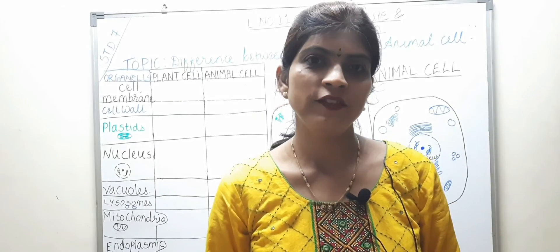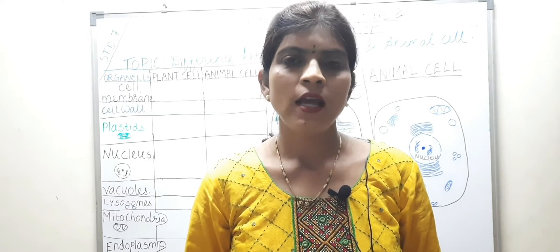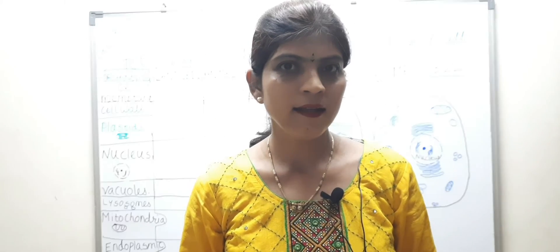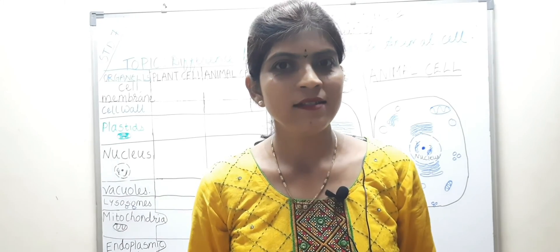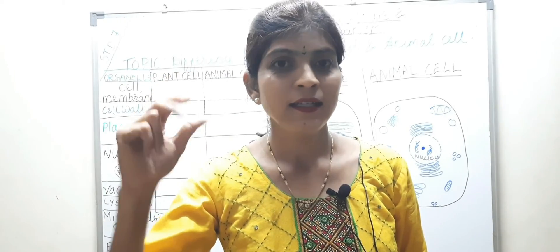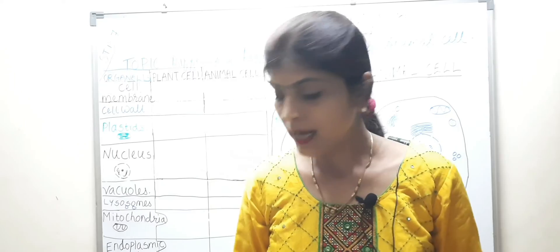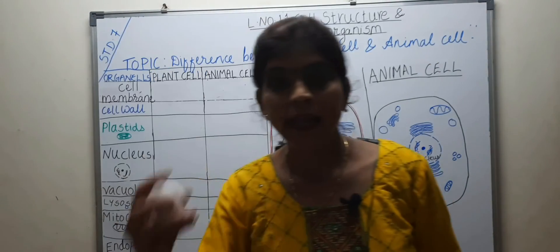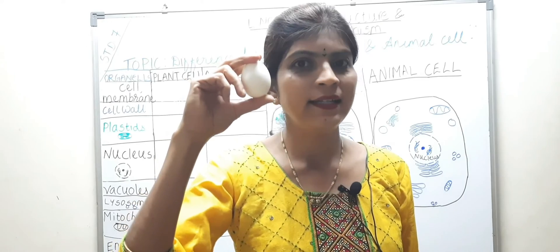And that's why the study of cells is so very significant. Children, cells are very minute and not to be seen by the naked eye. But do you know the largest cell available on this earth is the egg of an ostrich? Children, I don't have the ostrich egg, but I do have the egg of a hen, which is also large enough to be seen by the naked eyes.